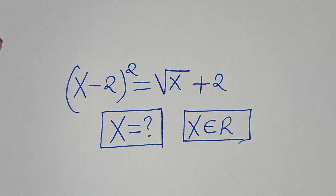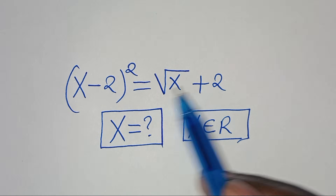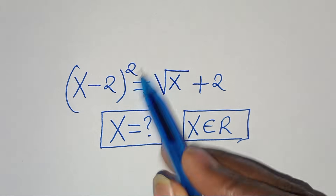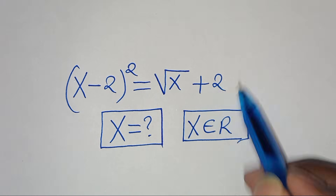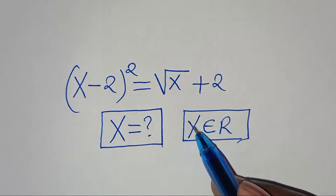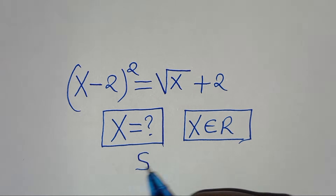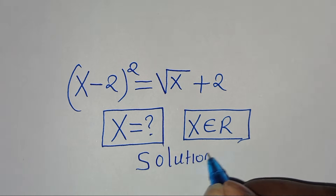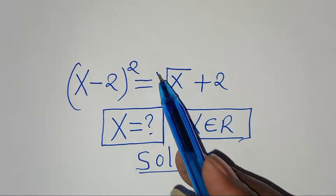Hello everyone, you're welcome to solve this nice algebra equation which is (x minus 2) to the power of 2, this is equal to square root of (x plus 2). So what are the values of x, given that x is a member of real numbers? Let's provide a solution.